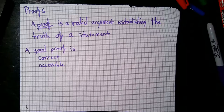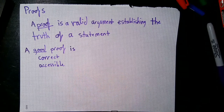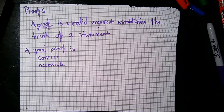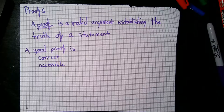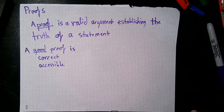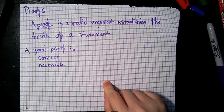A proof is a sequence of arguments that helps show that a statement is true. The first criterion of a good proof is that it is correct. By a proof being correct, not only should your logic be sound, but you also have to demonstrate why your logic works. You should back up your arguments with evidence that tells a reader why they are correct. You shouldn't be making logical jumps.